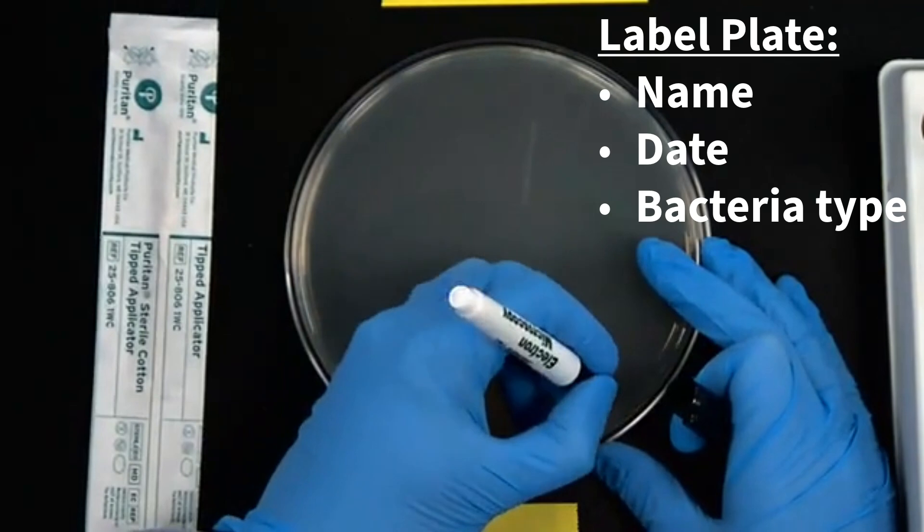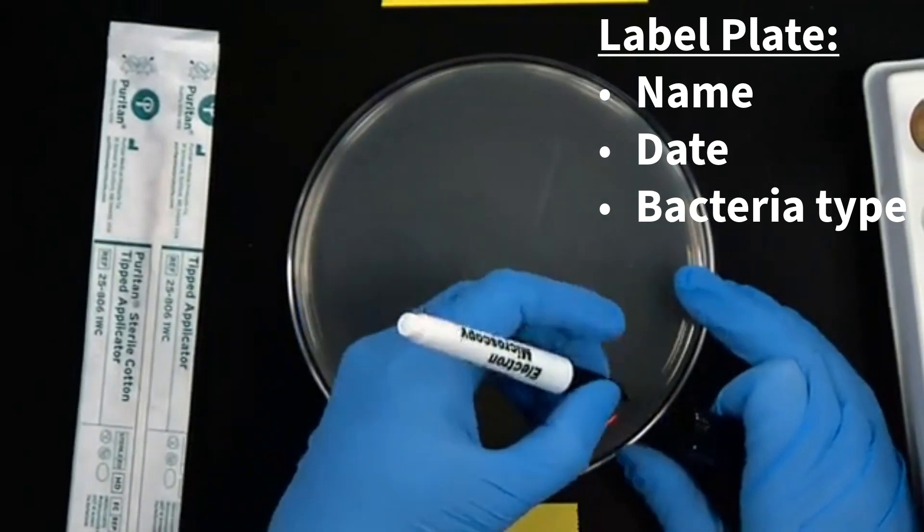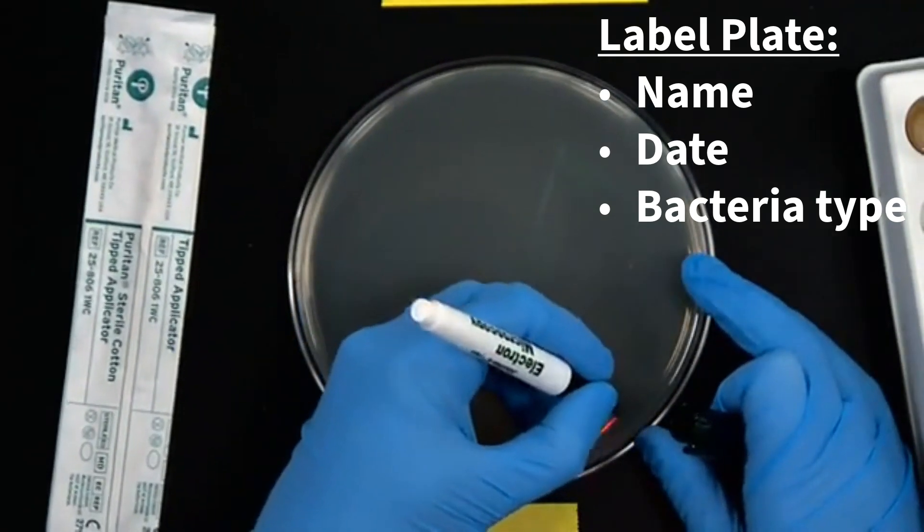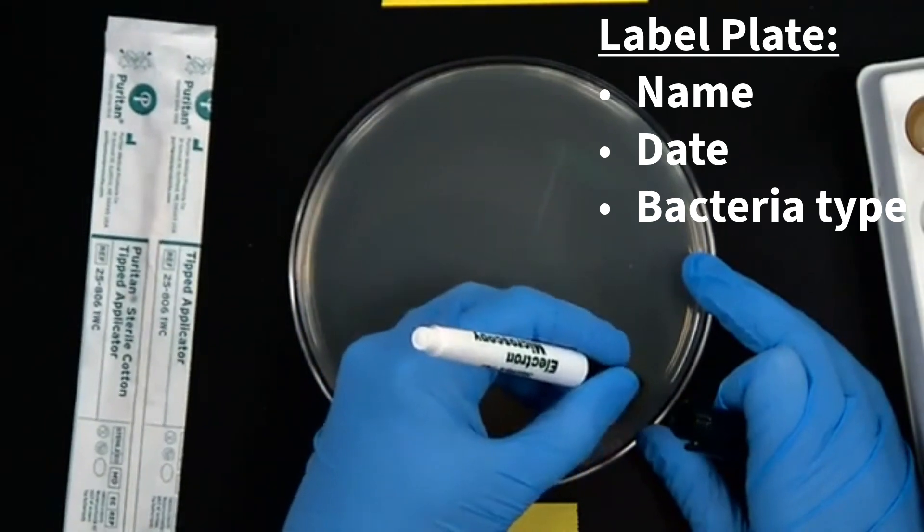First, label the Mueller-Hinton agar plate with your name, the date, and the bacteria that you're going to spread on the surface of the plate.